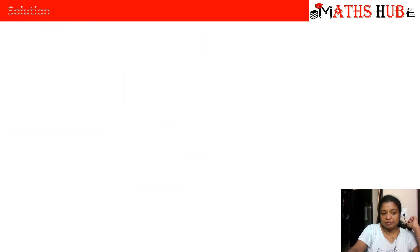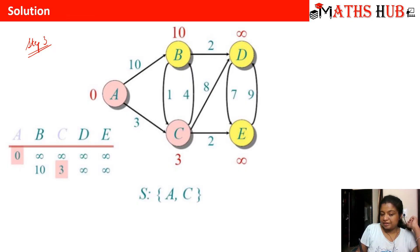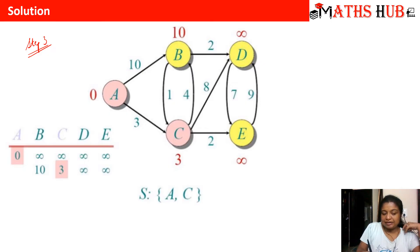In step number three, the source set has been improved. Earlier there was only vertex A; now we have also added vertex C. In the figure, vertex C is also marked in pink because both vertices are now in the source set. The distances have been improved from infinity to 10, 3, infinity, and infinity, and we highlight 3 as the minimum distance. Whichever vertices go inside the source set, we highlight them — so A and C are highlighted.